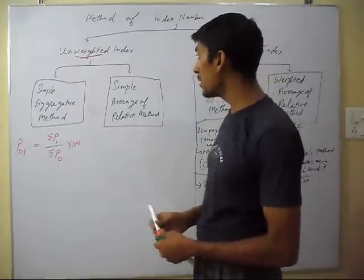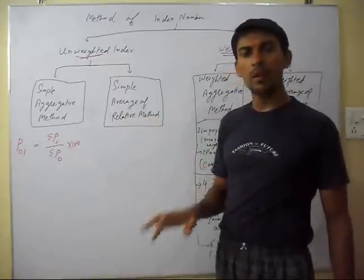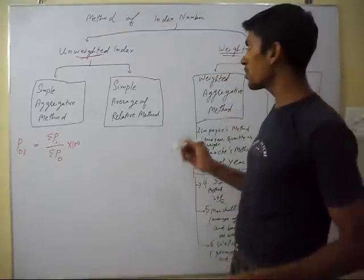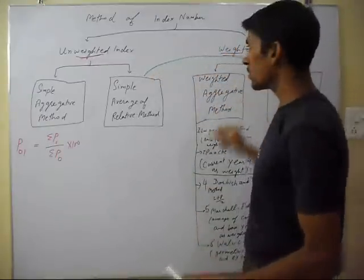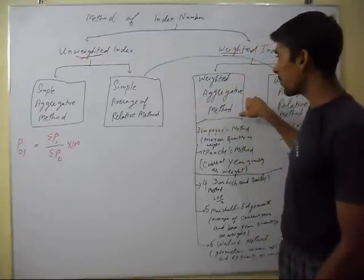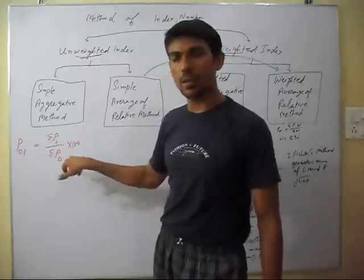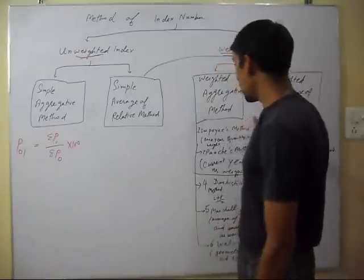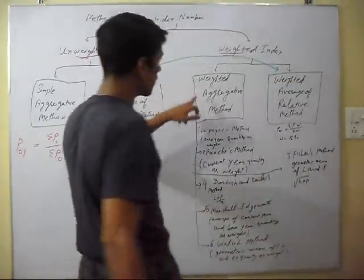The second method is the Simple Average of Relative method. Before that, we will explain the weighted aggregate methods, because they are related. There are six methods in total. First of all is the Laspeyres method in the weighted aggregate category.